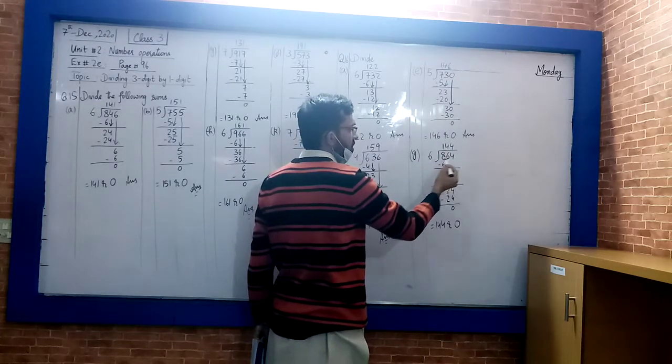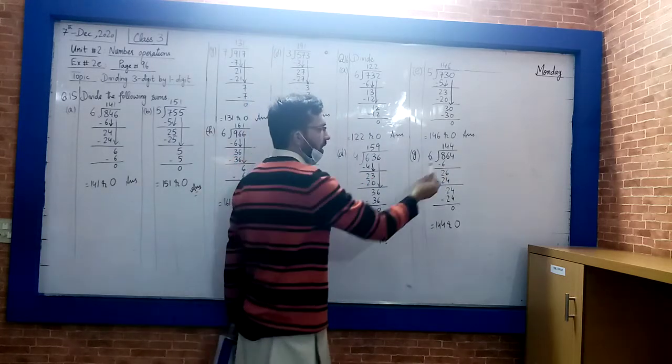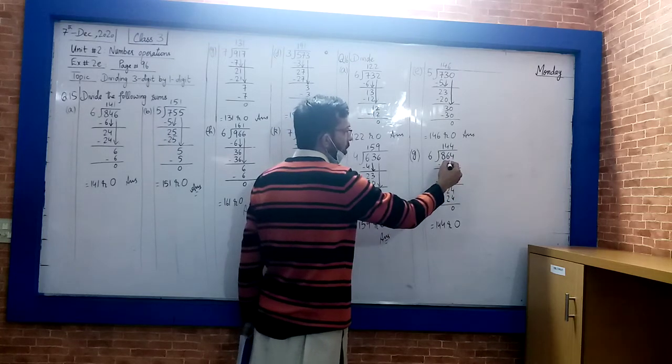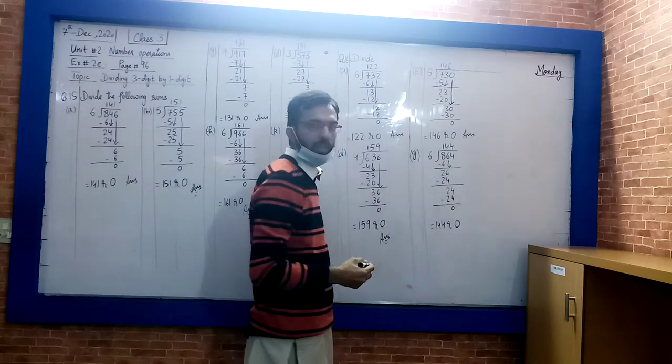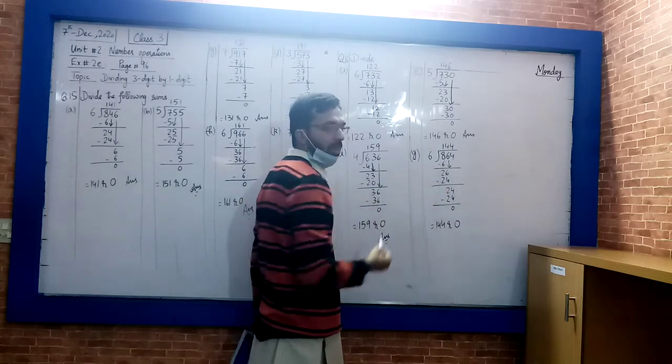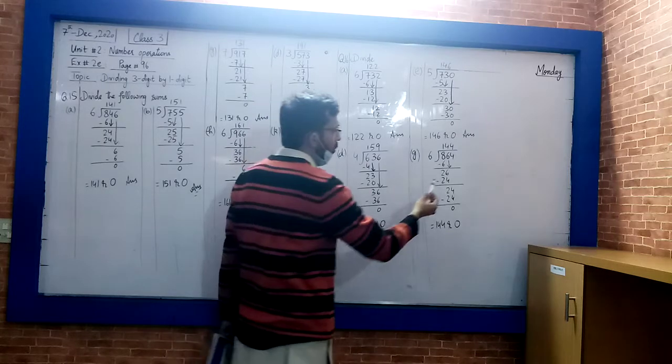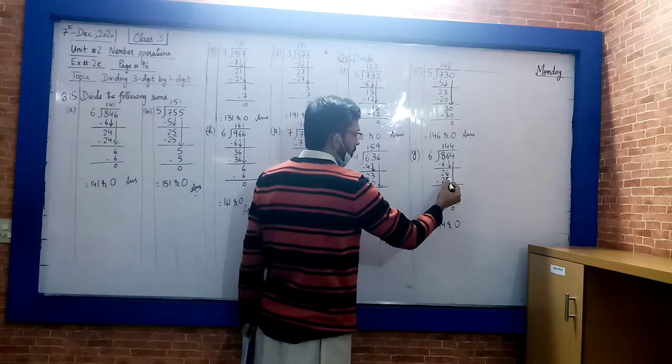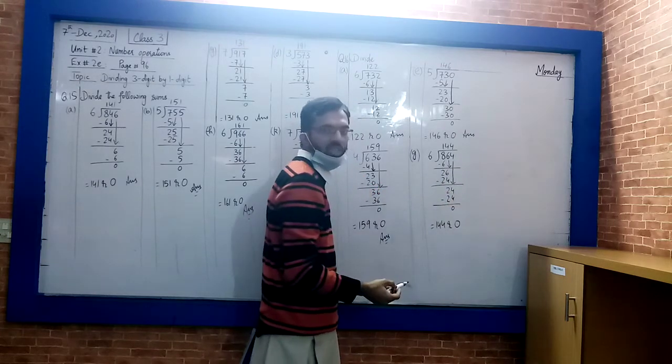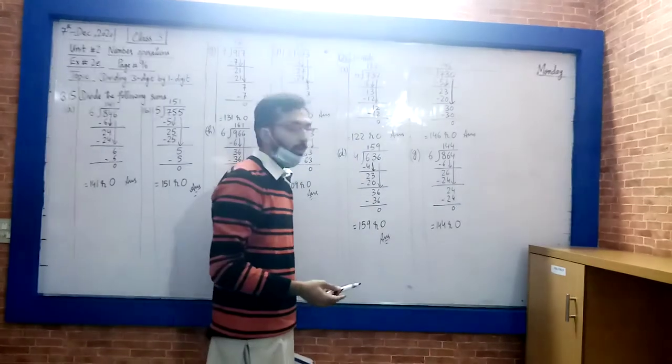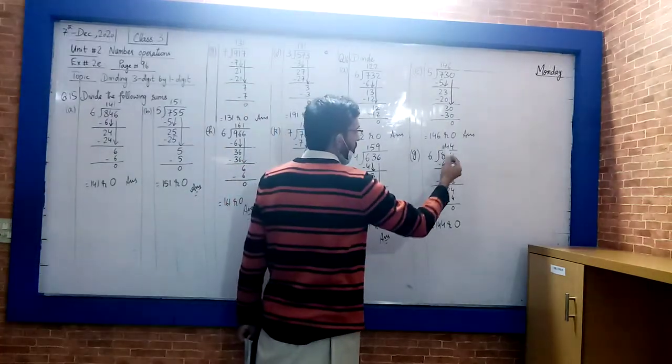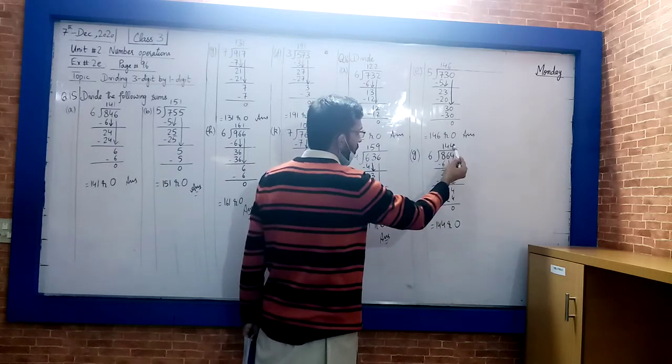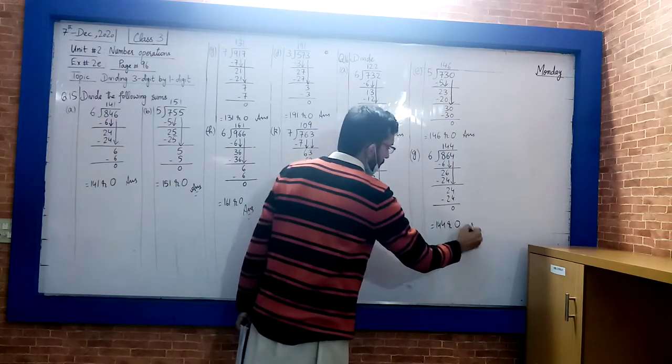Next part G: 864 divided by 6. Starting with the first digit, 6 into 8 goes 1. 8 minus 6 is 2, remainder 2. Next digit is 6, making 26. 6 into 26 goes 4. 6 times 4 is 24, leaving 2. Next digit 4 comes down making 24. 6 into 24 goes 4. 24 minus 24 equals 0. The answer is 144, remainder 0.